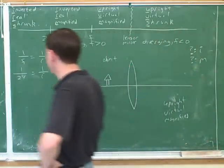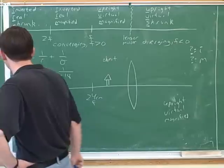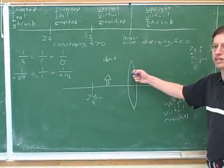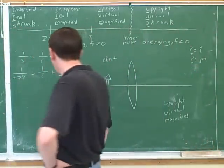That's right. And which part of the problem told us that? How do we know it's positive? Because it's a converging lens. Because it's a converging lens. Okay. Good.